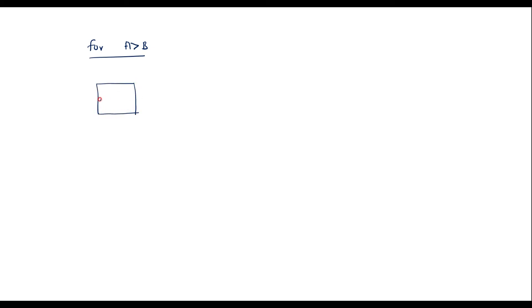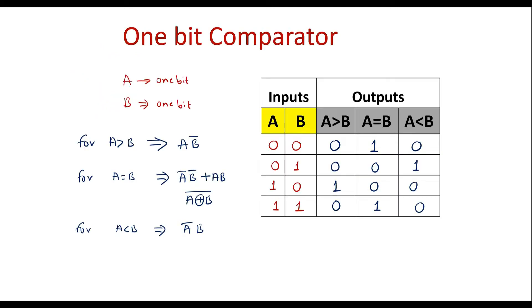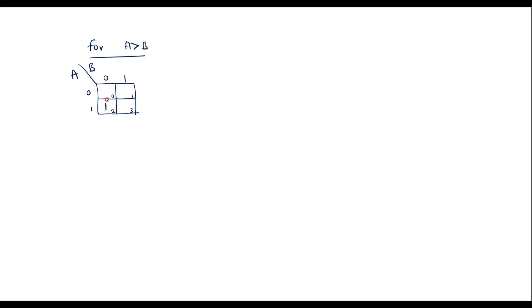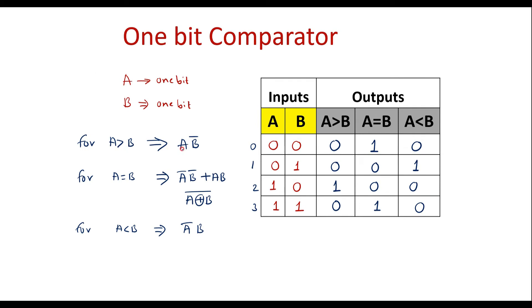In a two-variable K-map, we have four cells. This axis is a, this axis is b, with values 0 and 1. The cell numbers are 0, 1, 2, and 3. For a greater than b, the output is 1 which corresponds to a=1 b=0, that is cell number 2. So in cell number 2 we write 1, and the remaining cells are 0. Simplifying, this single 1 corresponds to a=1 and b=0, giving us a·b̄. Same result as before — for a greater than b, the expression is a·b̄.